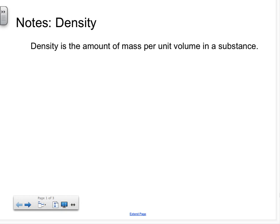Density is defined as the amount of mass per unit volume in a substance. So let's first talk about what this word, per, means. It means divided by.